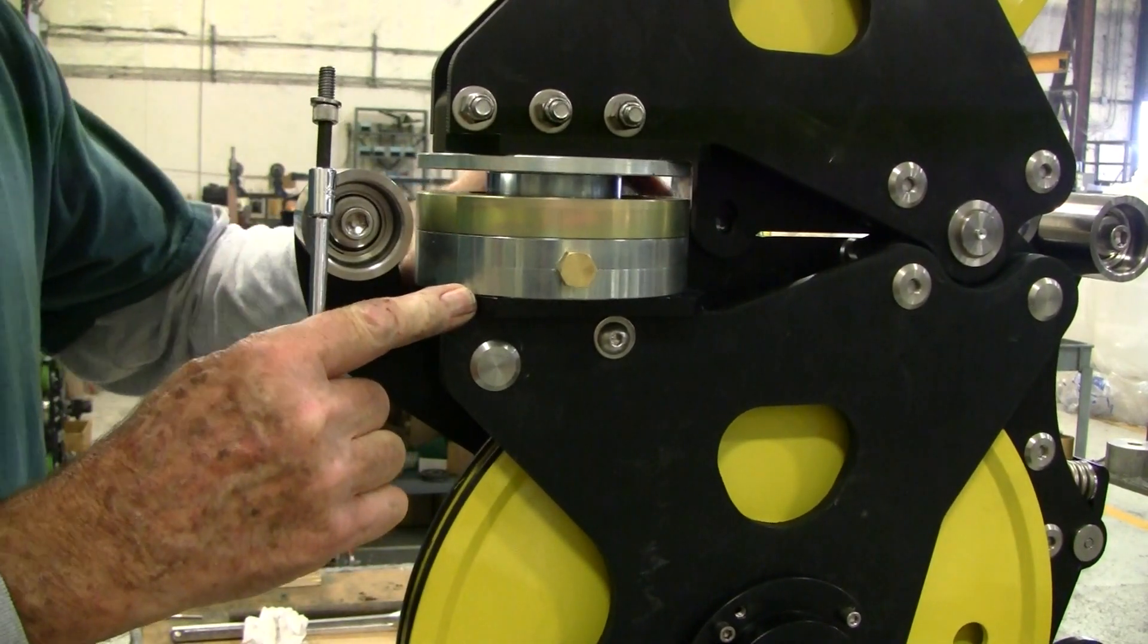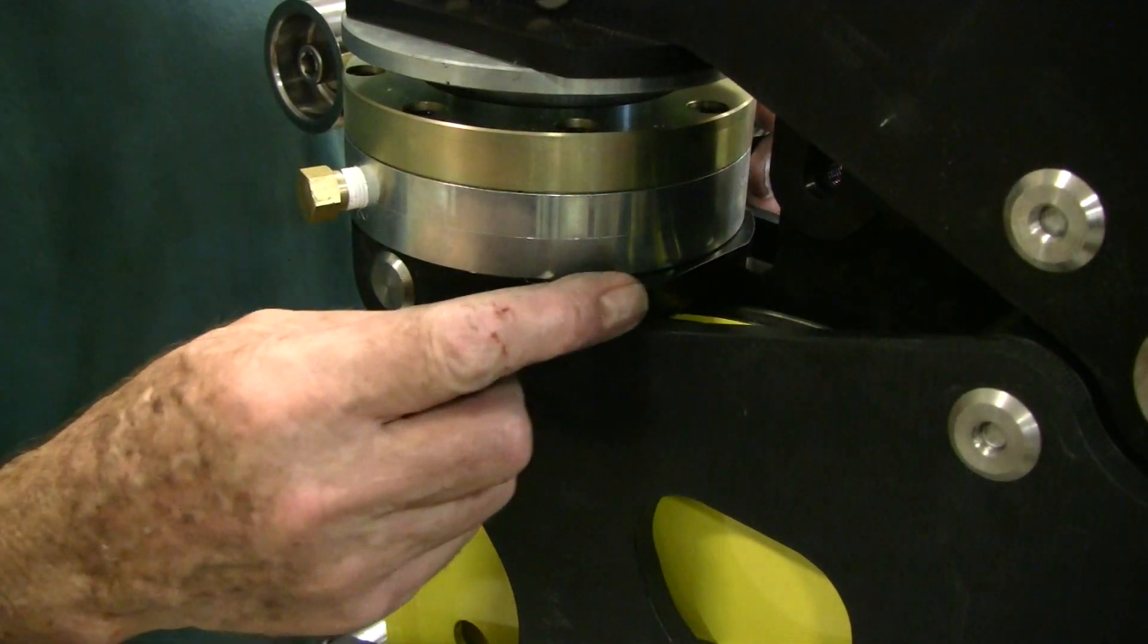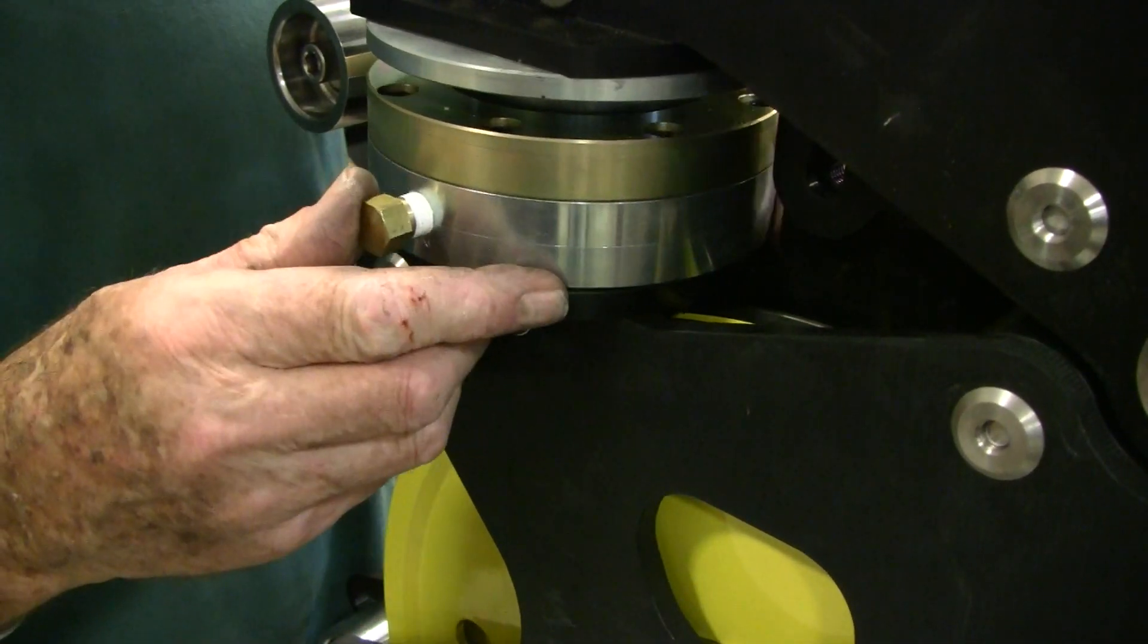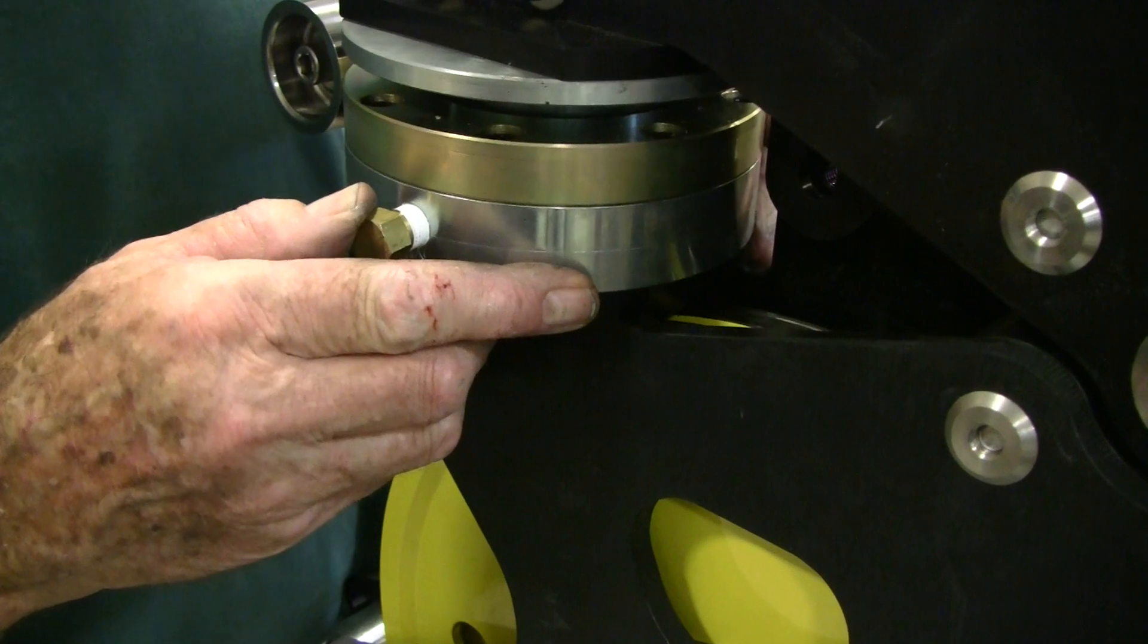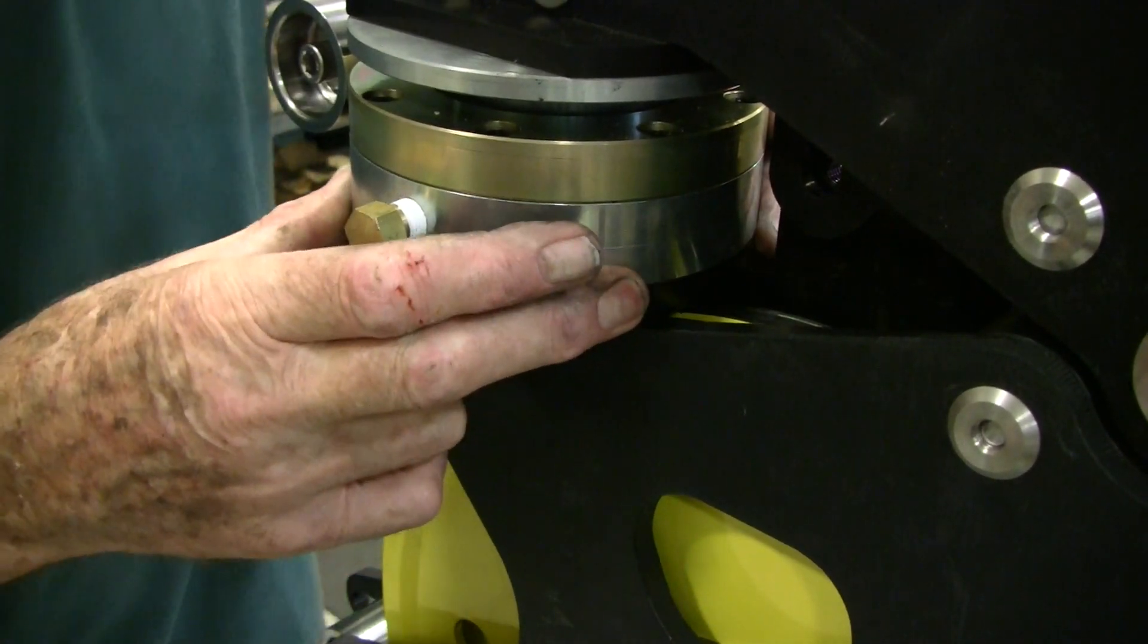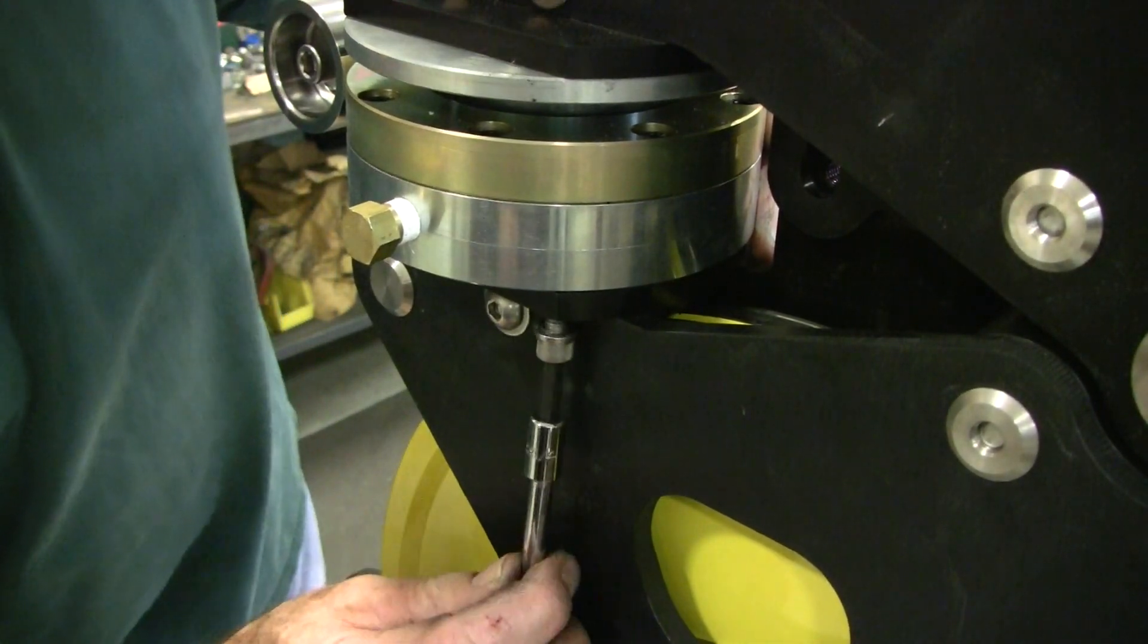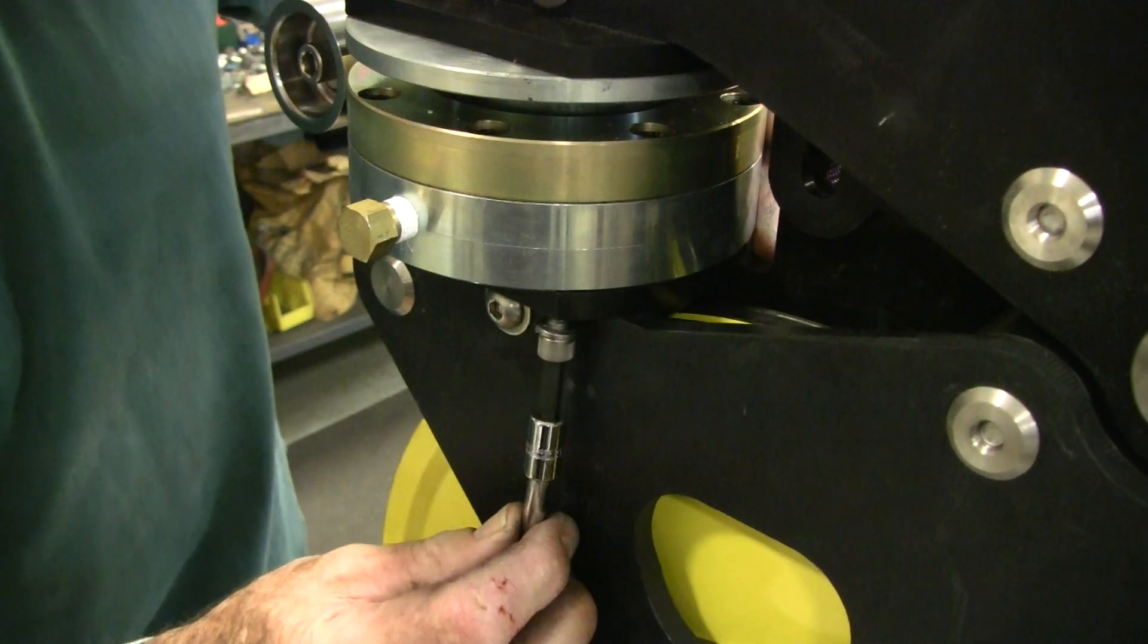Position the load cell so that the corners of the cell match up with the rounded corners of the mounting plate, and center the load cell as shown. Now install the two screws through the bottom of the mounting plate. Do not fully tighten them at this point.